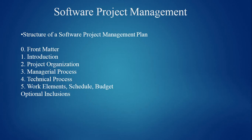After the front matter, the second part is the introduction of our software project. Then there will be project organization — for which organization we are developing the project. Next are the managerial processes we will apply, followed by the technical processes. Finally, there will be work elements, schedule, and budget. Any additional items can go into optional inclusions.